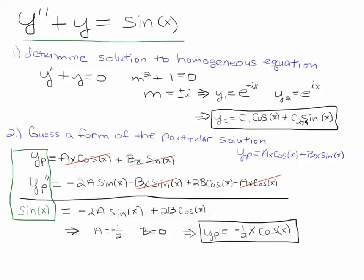And my complementary solution is up here. So my general solution is the sum of these two. The c1 cosine plus c2 sine and minus 1 half x cosine. All right. Good luck.